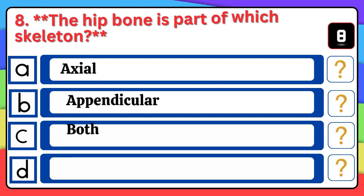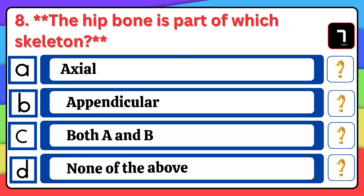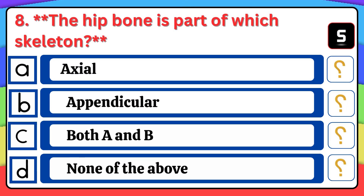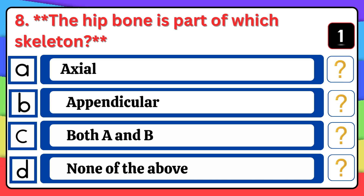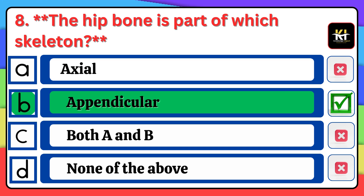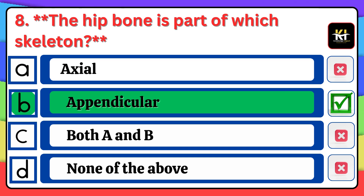Question number eight: The hip bone is part of which skeleton? Correct answer: Option B — Appendicular.